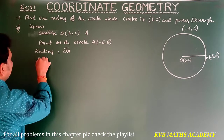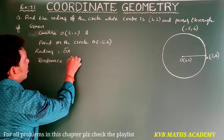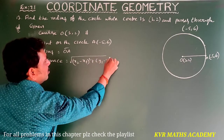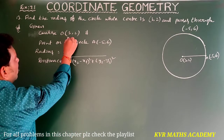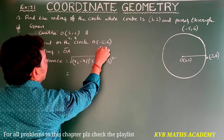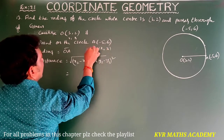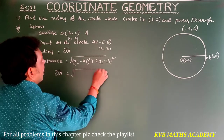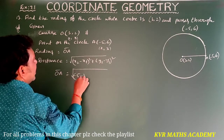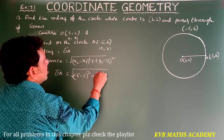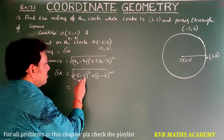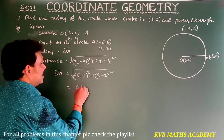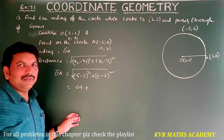What is the distance formula? Distance is equal to root of (x2 minus x1) whole square plus (y2 minus y1) whole square. So OA equals root of (-5 minus 3) whole square plus (6 minus 2) whole square. That is (-8) whole square plus (4) whole square, which gives 64 plus 16.